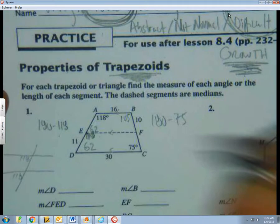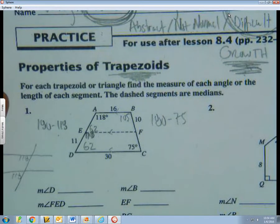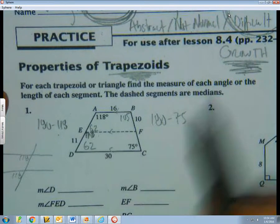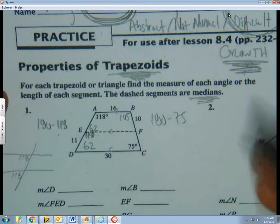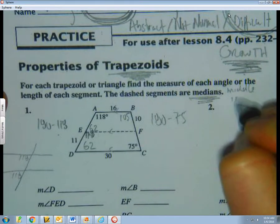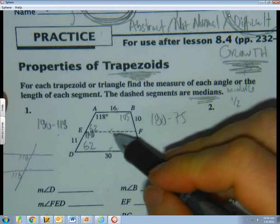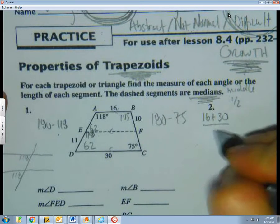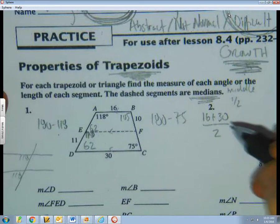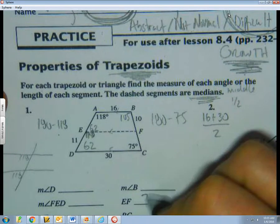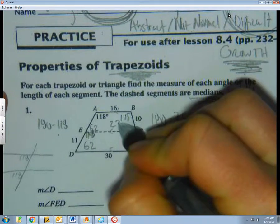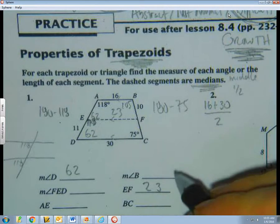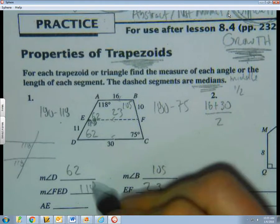118. And then you also have to find this. And it says the dashed lines are median. Median, middle, one half. So to find the length of this median, we're going to add the top and the bottom and divide by 2. So 16 plus 30 divided by 2. That's 46 divided by 2, which is 23.